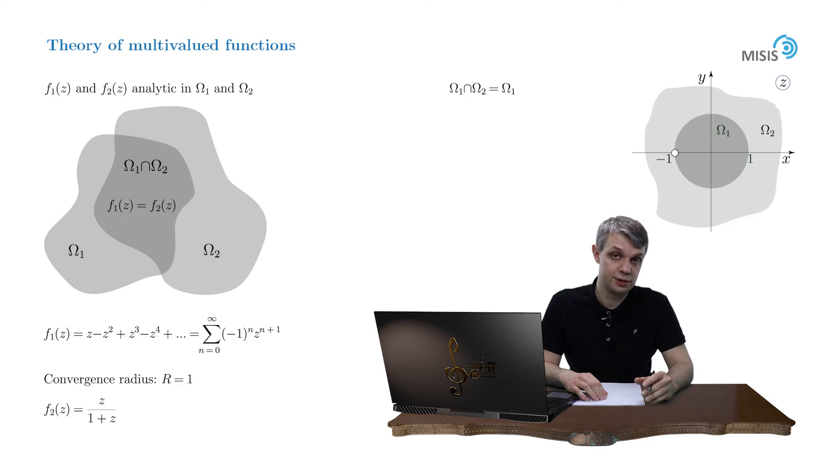One may wonder if it's possible to construct a different function, let's call it f₂ bar of z, such that it coincides with f₁ function inside the unit circle but is different from f₂ of z. A rather amazing and extremely powerful statement concerning the analytic continuation tells that as soon as it exists, it's unique.